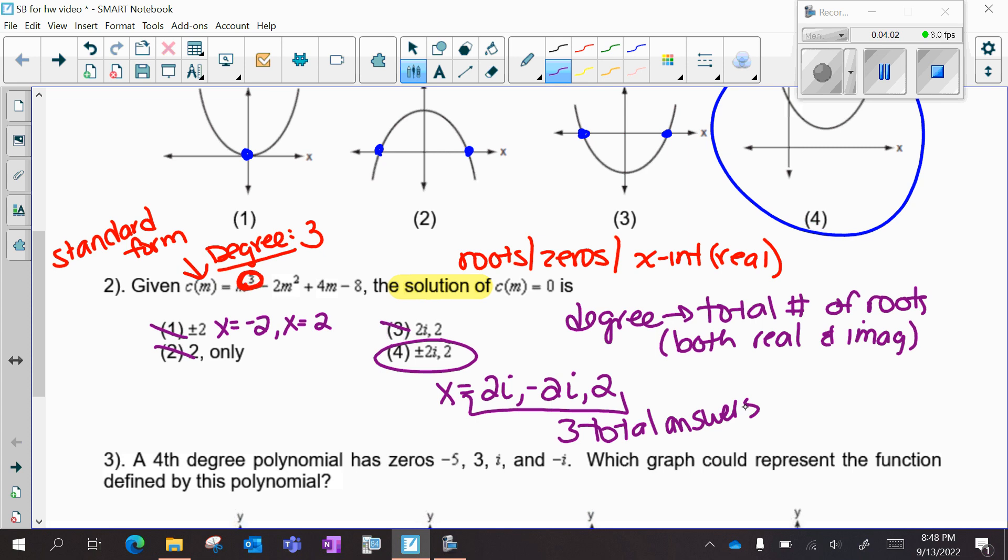If I wasn't able to do that and more than one answer choice had three solutions, I would need to either look at my calculator to look for my x-intercepts or use some algebra, factoring, quadratic formula, dividing, things like that to find my zeros algebraically.